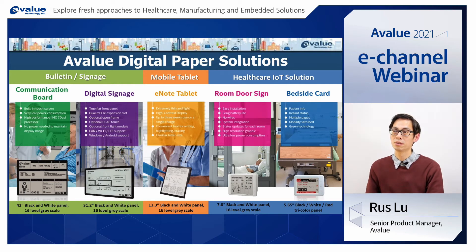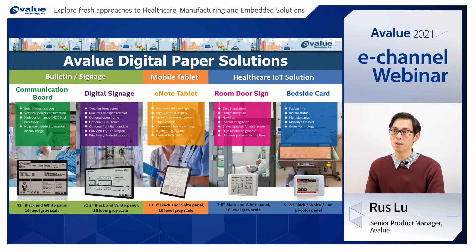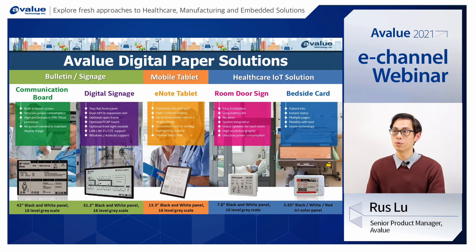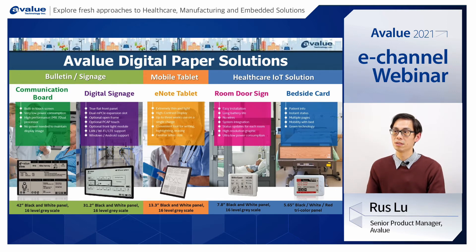The third one is the Eno tablet. Just like a normal Android tablet but with e-ink technology, so power consumption is quite low and you can operate it for up to two weeks at least. Nurses can use this device to replace traditional paper, such as surgery agreements or nursing forms. The fourth one is for the room door sign, and the last one is the bedside card. These two do not have a CPU inside — there is only an MCU — but we provide a complete backend management system, which means nurses can easily control and manage the information they want to push to each patient room.